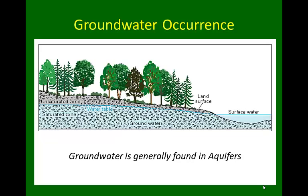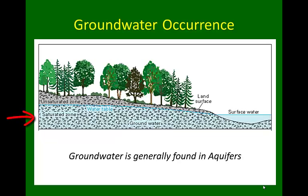Groundwater occurs in the subsurface, below ground, where it's often invisible to us at the surface. This schematic shows a cross section with a lake or stream on the right-hand side. Underneath the hill slope there are two layers: an unsaturated zone near the surface where some water is held between particles of soil and rocks, but the majority is air. A dashed blue line indicates the water table, and below that, the pores are mostly filled with water — we call that the saturated zone.